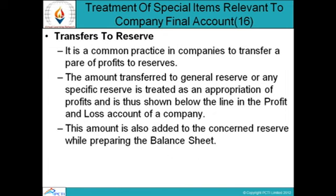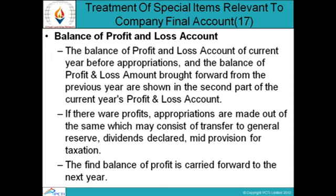Transfers to Reserves: It is common practice for companies to transfer a portion of profits to reserves. The amount transferred to general reserve or any specific reserve is treated as an appropriation of profits and shown below the line in the profit and loss account. This amount is also added to the concerned reserves while preparing the balance sheet. Balance of Profit and Loss Account: The current year's balance before appropriations and the balance brought forward from the previous year are shown in Part 2 of the P&L account. Appropriations may consist of transfers to general reserve, dividends declared, and provisions for taxation, with the final balance carried forward to the next year.